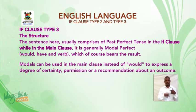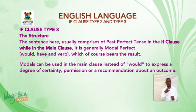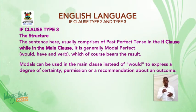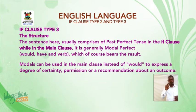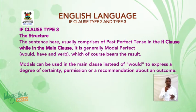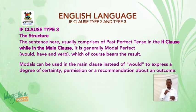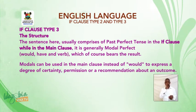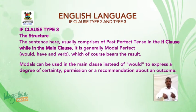Now we go to if clause type 3. The structure: the sentence here usually comprises past perfect tense in the if clause, while in the main clause it is generally modal perfect — would have and verb, which bears the result. Modals can be used in the main clause instead of would to express a degree of certainty, permission, or a recommendation about an outcome.